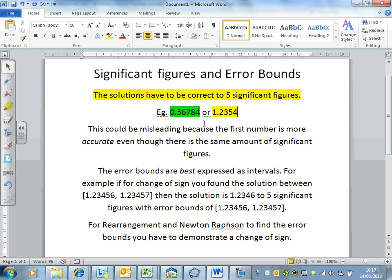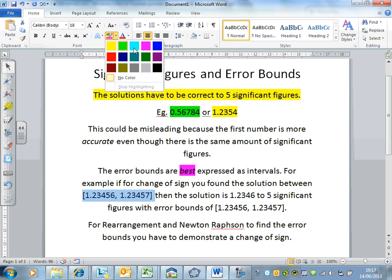You need to make sure you have your answer to significant figures. In terms of error bounds, they are best expressed as intervals. The change of sign method is very easy to get an error bound. For example, let's say you find a solution to an equation and you've found